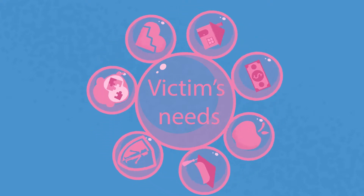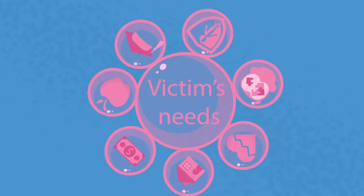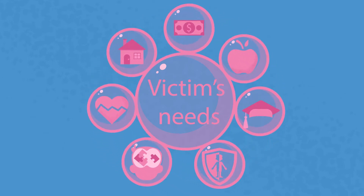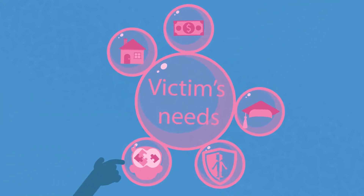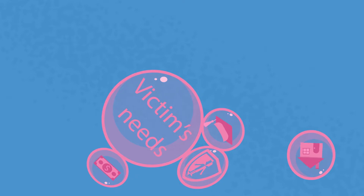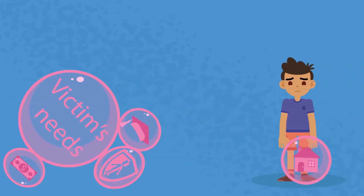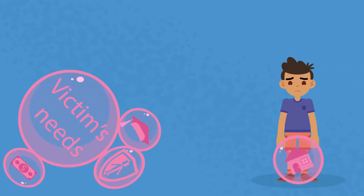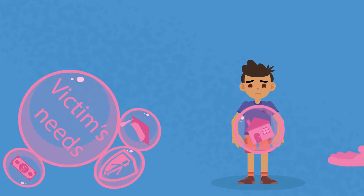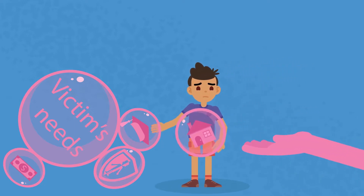A victim-centred approach gives priority to the needs of the victims. Its objective is to prevent the victim from experiencing secondary victimisation through their interactions with a system whose logic is foreign and insensitive to their situation. For vulnerable victims like children, this is particularly essential as they may not know where to reach out to respective service providers.